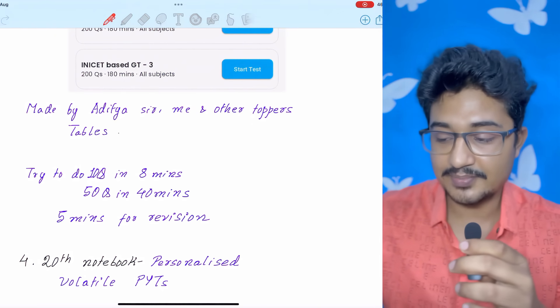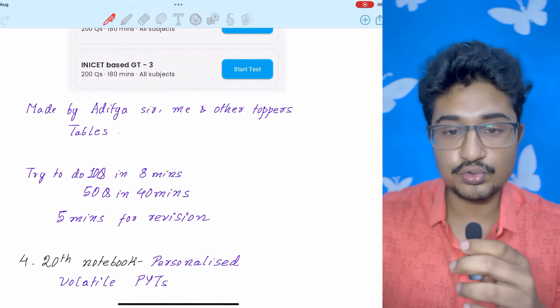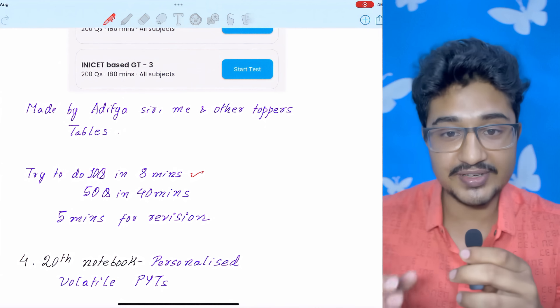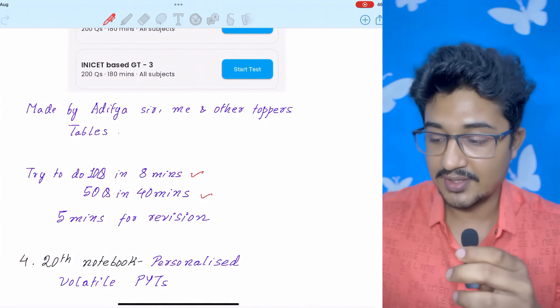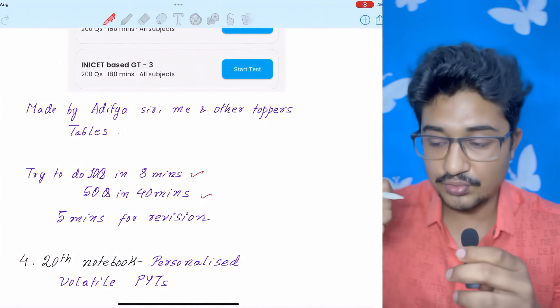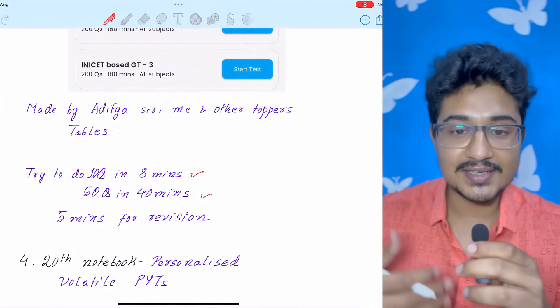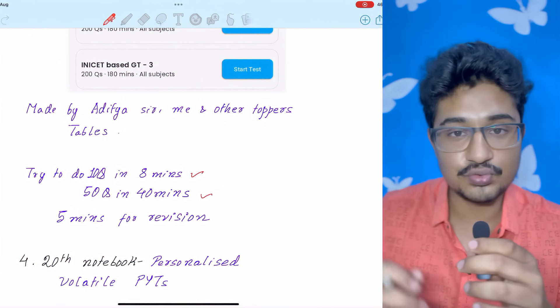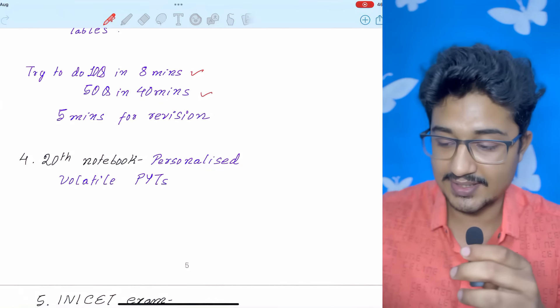And for the time crunch perspective, try to do 10 questions every eight minutes. Like this, you will complete 50 questions in 40 minutes. Or 45 minutes also. So, more five minutes, you can go for revision. As there are chances of committing silly mistakes, if you do and revise through all the questions, you won't have any silly mistakes in the exam.